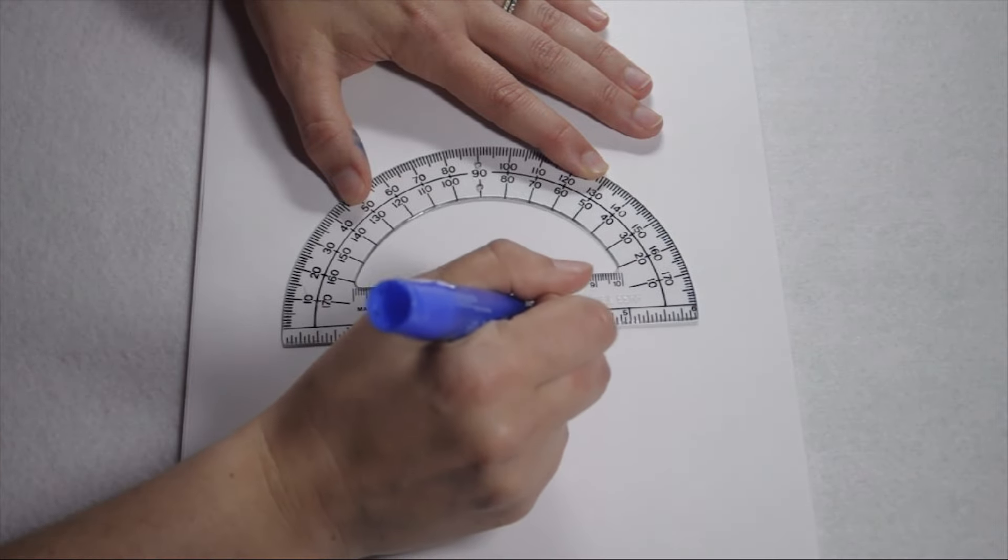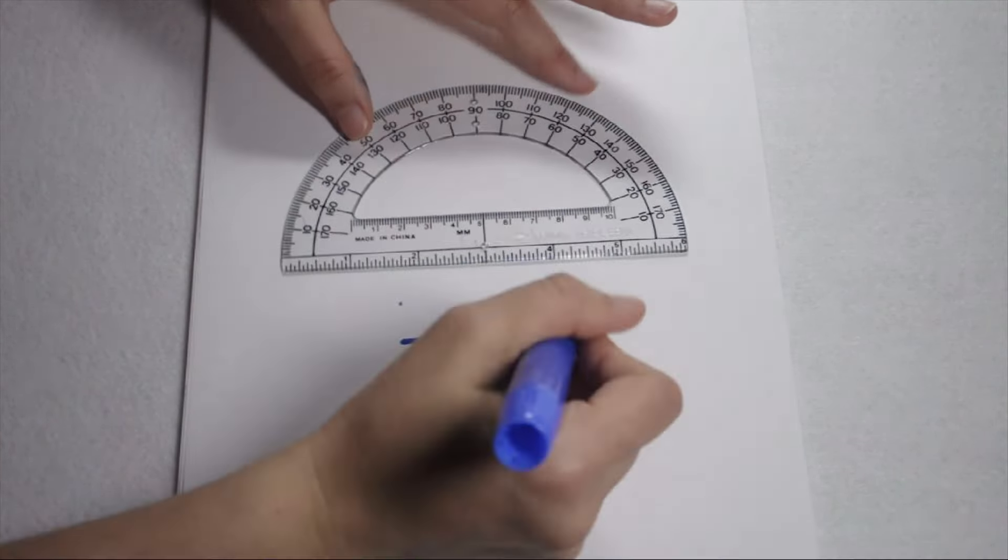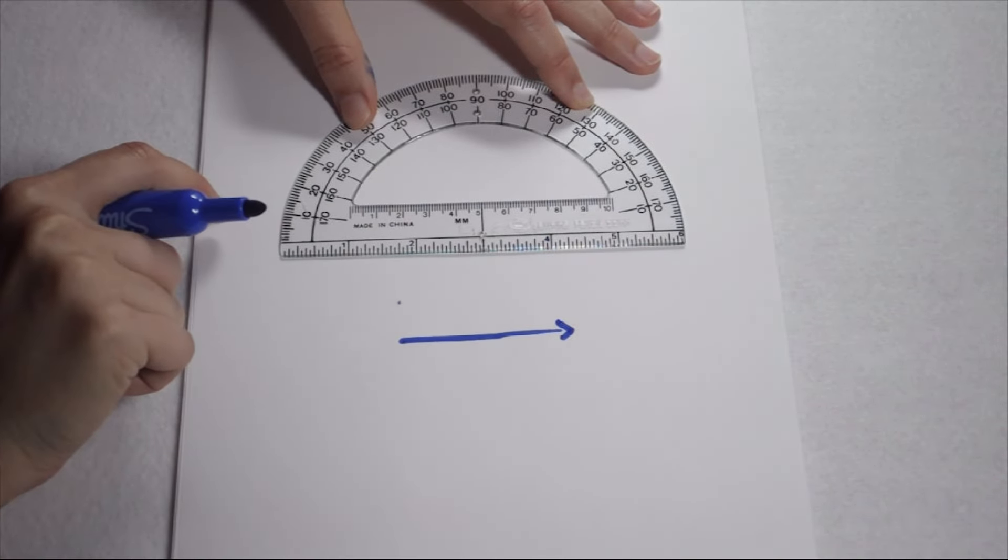To do that, I can simply use the bottom edge of my protractor as a straight edge to draw a line. We know rays will go on forever in one direction, so that means I can use the other edge as my vertex.